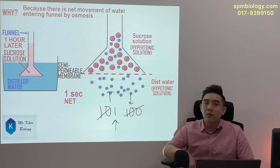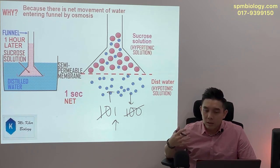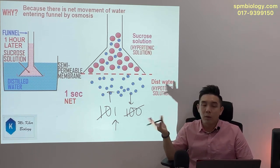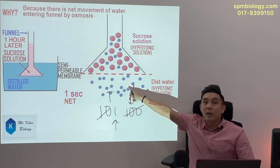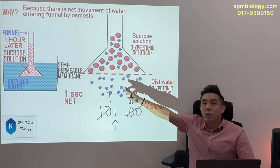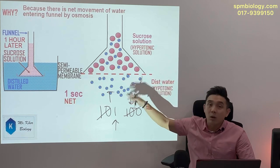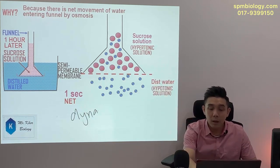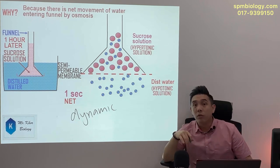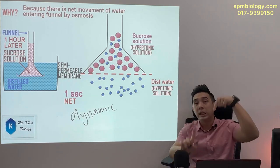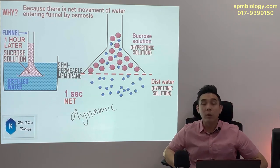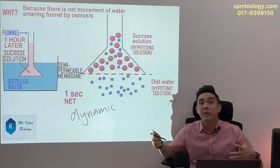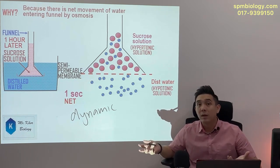In the exam, they won't ask you in that much detail. But what is important is that you know: although water enters, there is still water moving out, because water movement is dynamic. We can't stop water movement — it's always in two directions. The question is more about what the net movement is and from where to where.